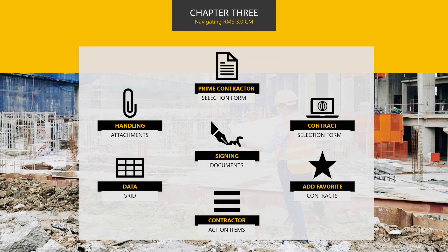In Chapter 3, you will learn the Prime Contract Selections form and Contract Selection screen, how to add favorite contracts, contractor action items, the data grid, uploading attachments, and electronically signing Word or PDF documents.